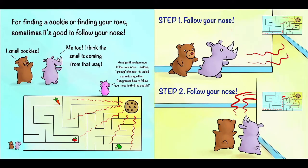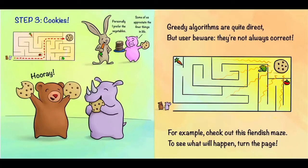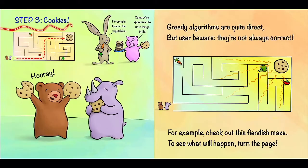Step one, follow your nose. Bear and Rhino are going to run around the corner. Step two, follow your nose. Once again, run around the corner. Step three, cookies! Hooray! Looks like our heroes found the cookies. And indeed, here was the path that they took.